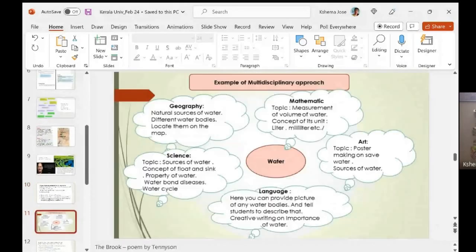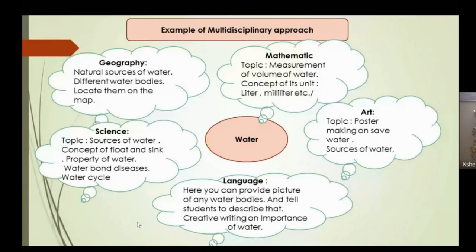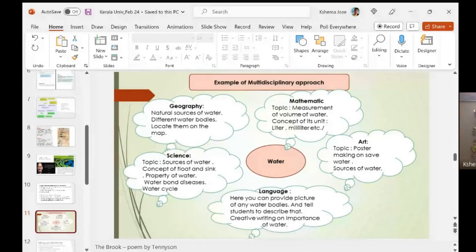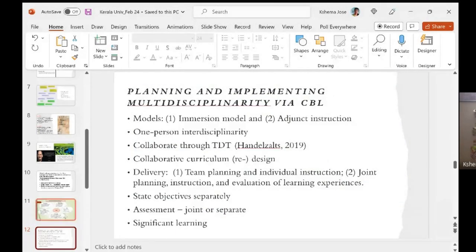Here is another example: one of my students used this idea to create a multidisciplinary approach when teaching The Brook by Tennyson — we must all have learned it in school. She used that poem as her central concept, then brought in something from mathematics and arts, building a multidisciplinary curriculum into her classroom. Moving on, I'd like to think about how we can implement this. I'm going to quickly run through two models I basically prefer.